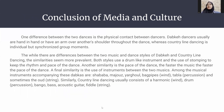In conclusion, one difference between the two dances is the physical contact between dancers. Dabka dancers are usually hand in hand or have an arm over another's shoulder throughout the dance, whereas country line dancing involves individual movement within a group. While there are differences between the two music and dance styles, the similarities seem to be more prevalent.